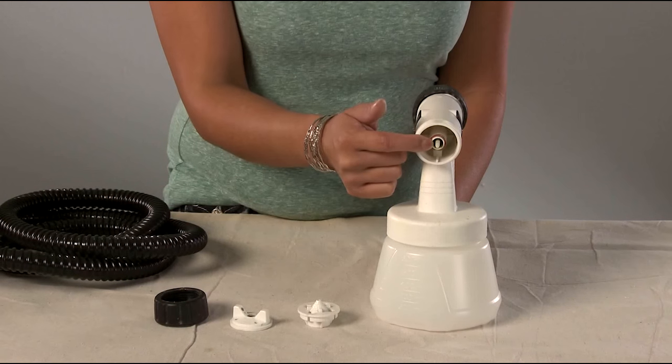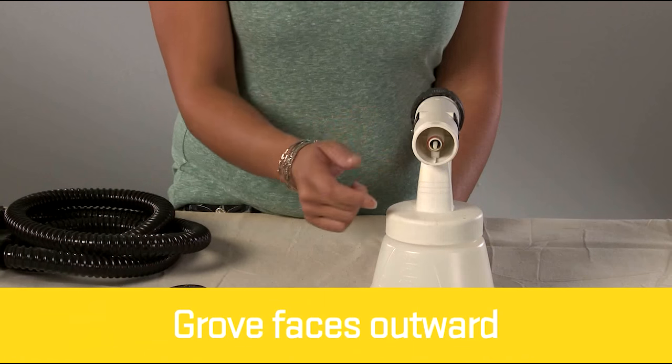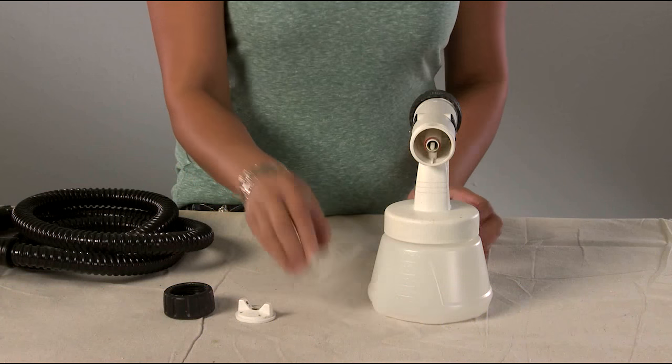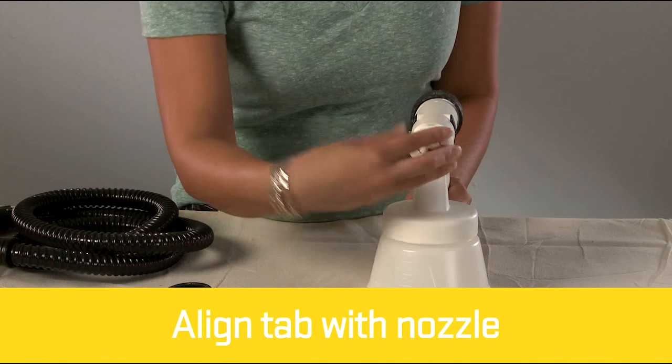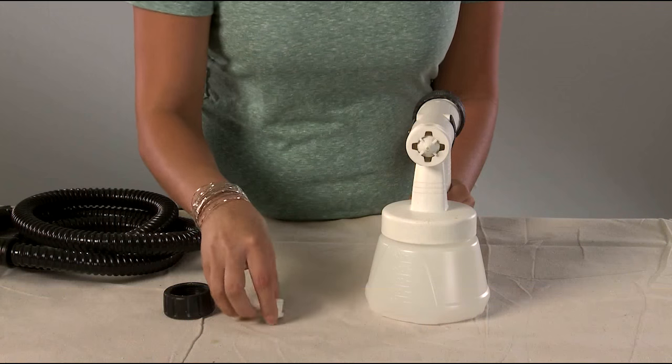When reassembling the spray gun, make sure the groove in the nozzle seal is facing outwards. Also, make sure the tab in the spray gun head is aligned with one of the notches in the nozzle. Then, connect all the nozzle pieces to the sprayer.